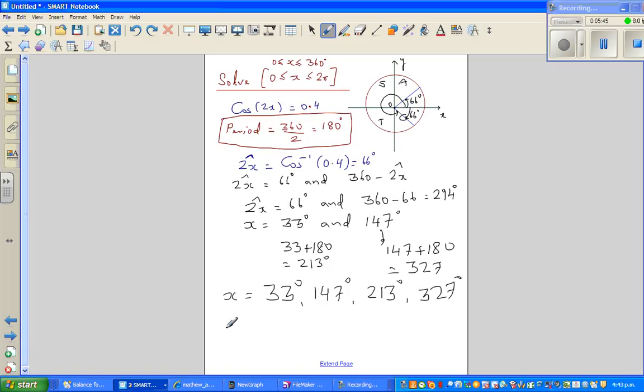If you want to change this into radians or π, this is nothing but 33π over 180, 147π over 180, 213π over 180, and finally 327π over 180. You can see in my previous videos how I changed this into radians.